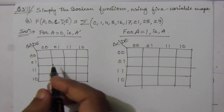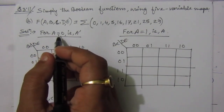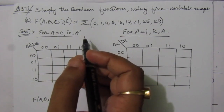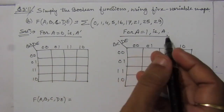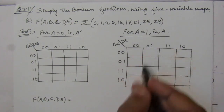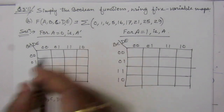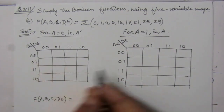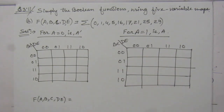For the first map, we will assume A equal to 0, or A-bar. For A-bar values, we will use this map, and for A equal to 1 values, we will use this map. From 0 to 15 this map will cover, and from 16 to 31 this map will cover.